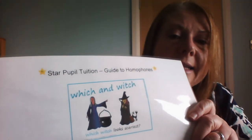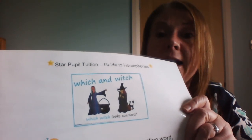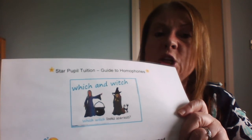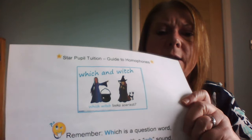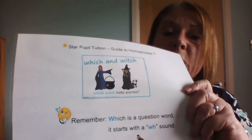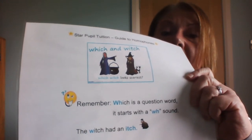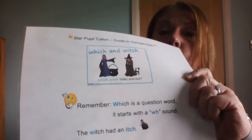The next pair is WHICH and WITCH. Think: W-H-I-C-H is a question word, so it has that W-H sound — which one do you want? And W-I-T-C-H is the evil witch from fairy stories. The little trick: the witch had an itch — so W and ITCH gives you W-I-T-C-H. Which starts with WH like other question words.